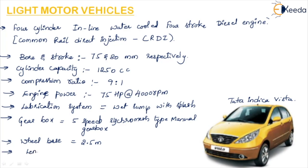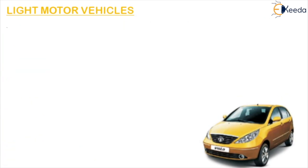The length of the Tata Indica Vista is approximately 3.8 meters. The width is 1.6 meters — so it is smaller when compared to the Hyundai Accent. The ground clearance is approximately 0.175 meters, same as the Hyundai Accent.